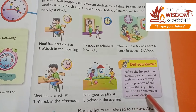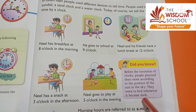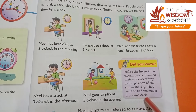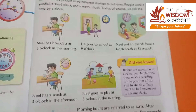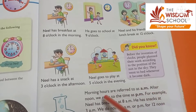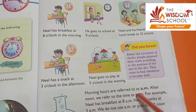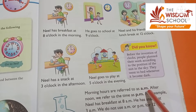They went to bed whenever it became dark. When the sun went down and it became dark, they went to sleep. Morning hours are referred to as AM — the morning hours are called AM.